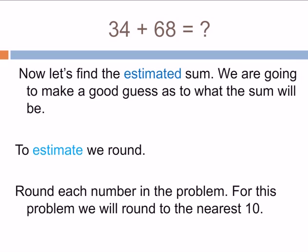But now we're going to find the estimated sum. That's a good guess of what the answer is. If you have 34 of something, 68 of something, about how many is that? It's just a guess, but it's a good guess—not a wild, crazy guess.